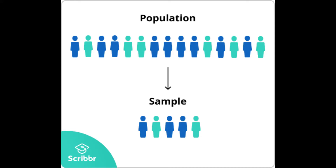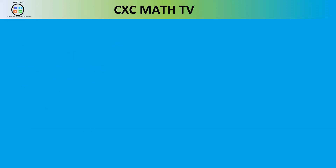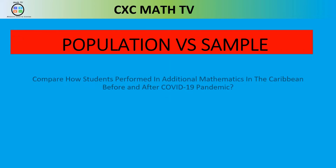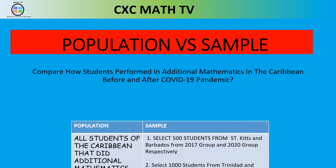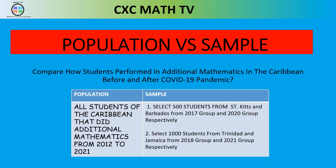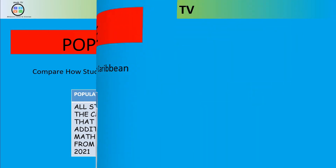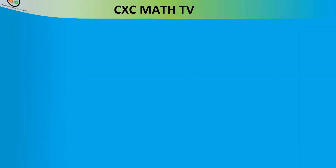Let's give you an example. Let's say you're asked to compare how students performed in additional mathematics in the Caribbean before and after the COVID-19 pandemic. The whole population of interest would be all the students who sat additional mathematics from 2012 to 2021 — all nine year groups. But a sample could be 500 students from St. Kitts and Barbados from the 2017 and 2020 groups, or 1,000 students from Trinidad and Jamaica from the 2018 and 2021 groups respectively.